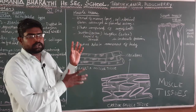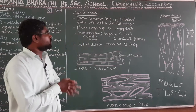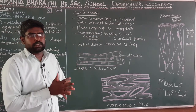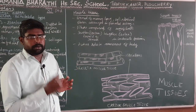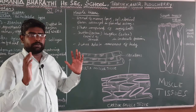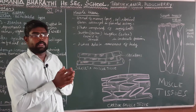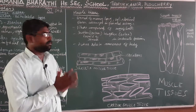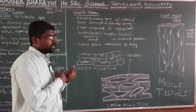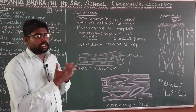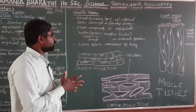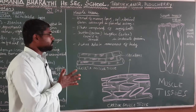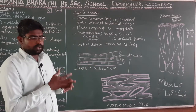Muscle tissue contracts and relaxes. It can shorten in the contracted part and return to its resting length when relaxed. This is the fundamental contractile mechanism of muscle tissue.